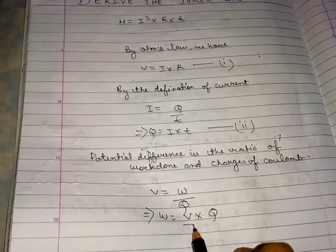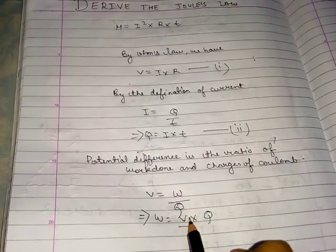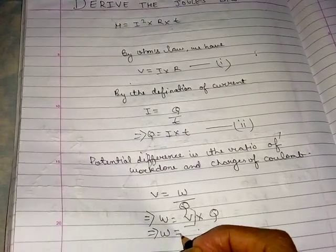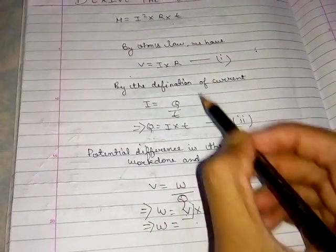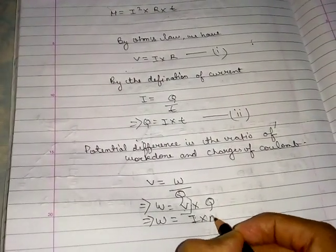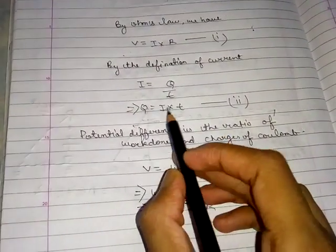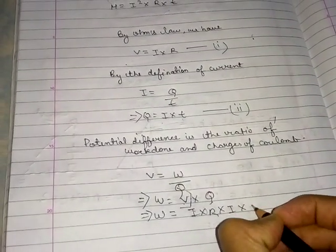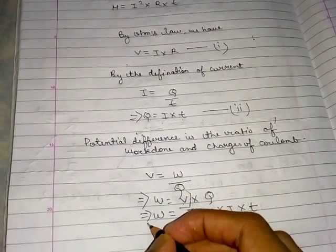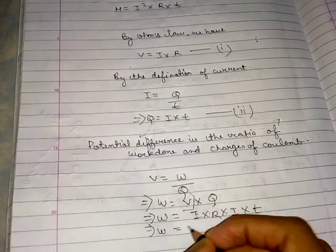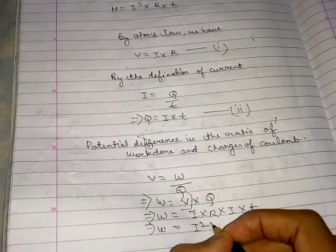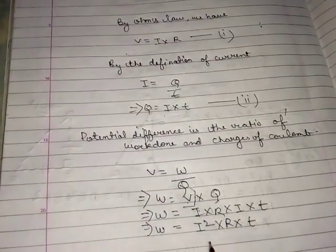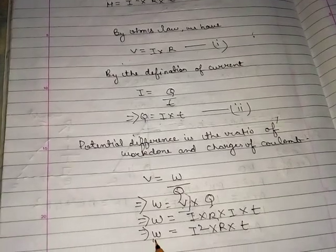W equals V, which is I into R, times Q, which is I into T. So W equals I squared into R into T.